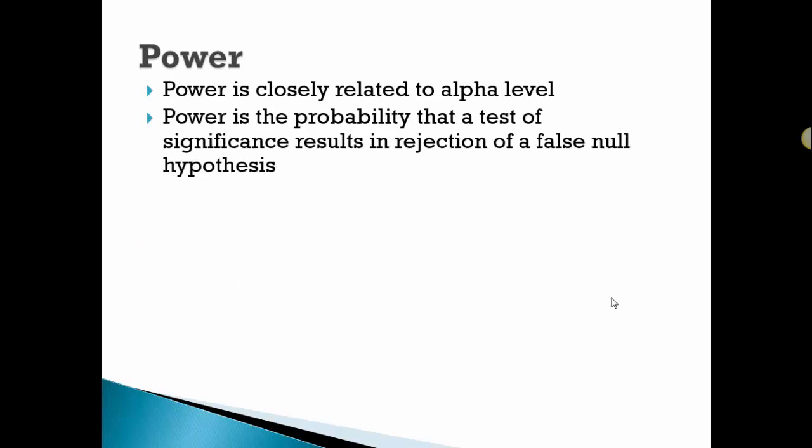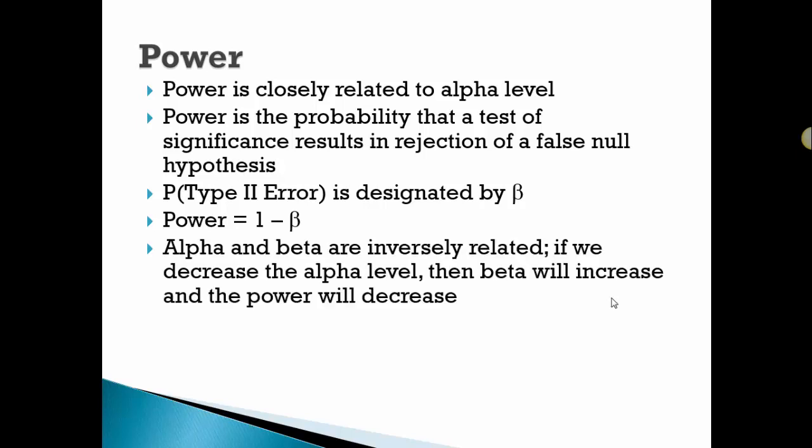Power is related to the alpha level. This is the probability that a test of significance results in rejection of a false null. It's designated by the Greek letter beta. It's the probability of Type II. The power is actually 1 minus beta. Alpha and beta are inversely related. If we decrease the alpha, the beta will increase and the power will decrease.